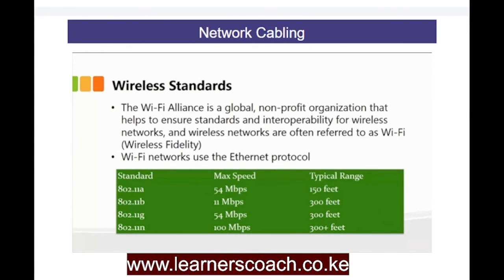Last are the wireless standards. The Wi-Fi Alliance is a global non-profit organization that helps ensure standards and interoperability for wireless networks. Wireless networks are often referred to as Wi-Fi, which stands for wireless fidelity. Wi-Fi networks use the Ethernet protocol and the grid here shows you the standards. For instance, the 802.11a standard has a maximum transfer speed of 54 Mbps with a typical range of 150 feet. The 802.11b standard has 11 Mbps with 300 feet, and so forth.